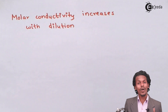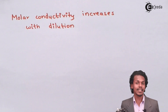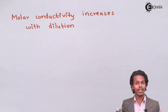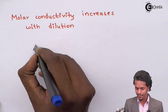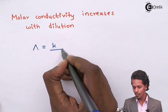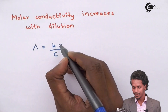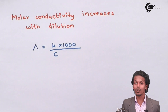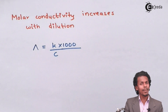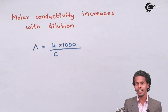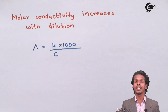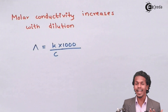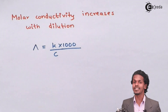Before understanding why molar conductivity increases with dilution, let me give you a glimpse. We can write the formula of molar conductivity as conductivity (κ) multiplied by 1000, divided by C. When we talk about conductivity, conductivity can be increased if the number of ions present in a unit volume is increased.